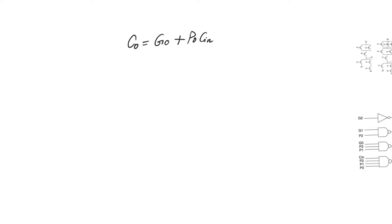We can start calculating C0 at the very beginning of the operation, because G0, P0, and Cin are all available at time equals zero, so C0 can be calculated at time equals zero.